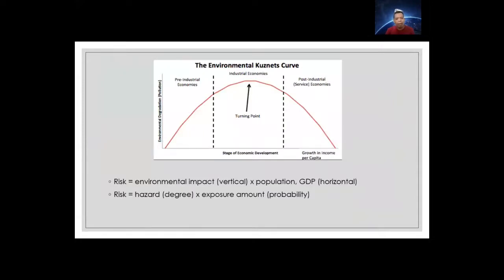Economically, the Kuznets curve is used to explain that the development of the capitalist economy produces social inequality; the difference eventually shrinks naturally and inequality is corrected. When we talk about risk, it equals environmental impact — vertical — times the population and GDP, or the gross domestic product, on the horizontal axis.